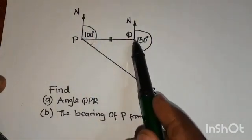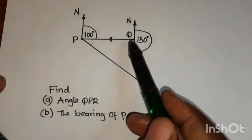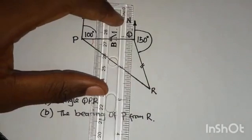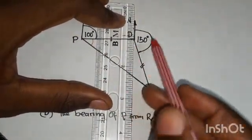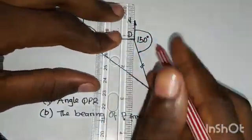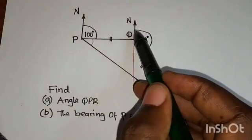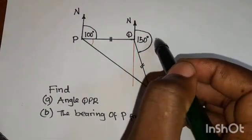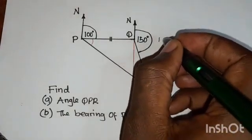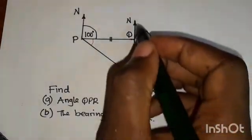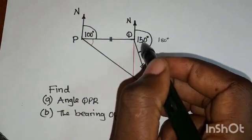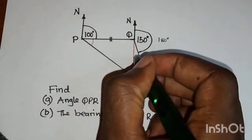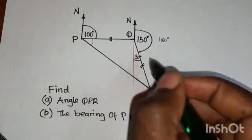Since this is the north and this is the north, to find this angle, let's first find this smaller angle by extending this north line. The extended north and the original form a straight line, so the sum of angles is 180 degrees. We've been given 150 degrees, so 180 minus 150 gives us 30 degrees. This small angle here is 30 degrees.